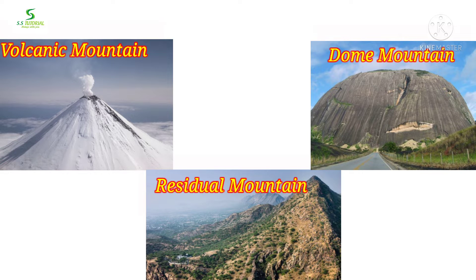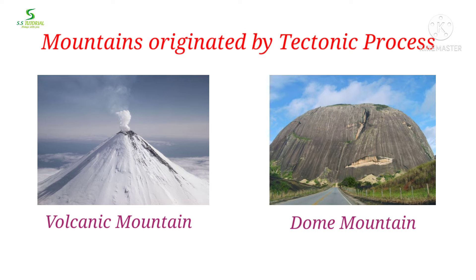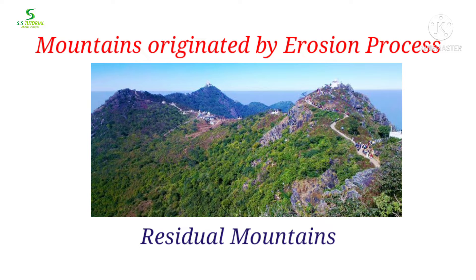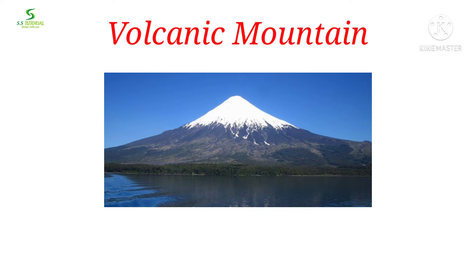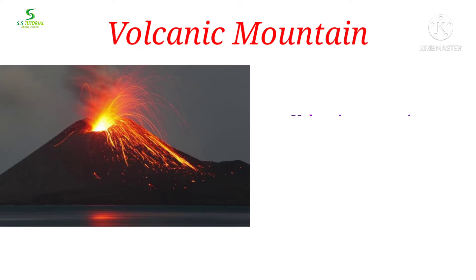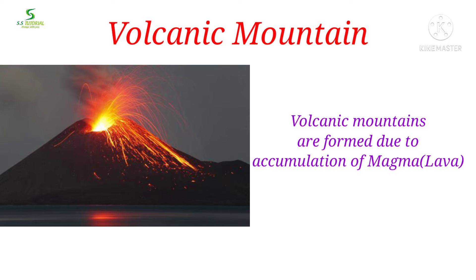Volcanic mountains and dome mountains are originated by tectonic processes, and residual mountains are originated by erosion processes. Let's know them one by one. Let's start with volcanic mountains.